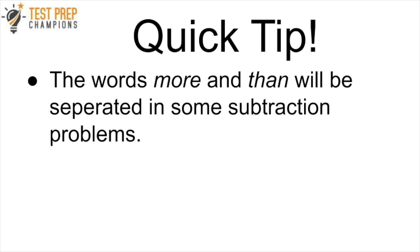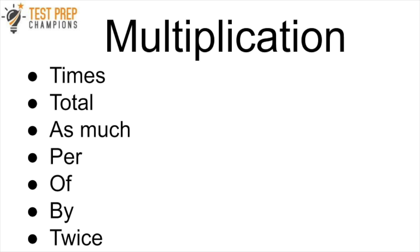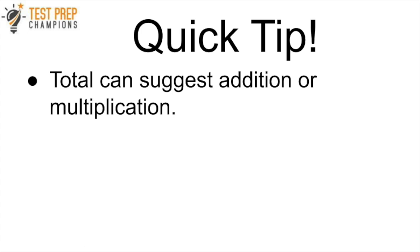For multiplication we have: times, total, as much, per, of, by, and twice. Here's a quick tip: the word 'total' can suggest addition or multiplication, and we're going to look at a trick to help you decide which one you need to use shortly.